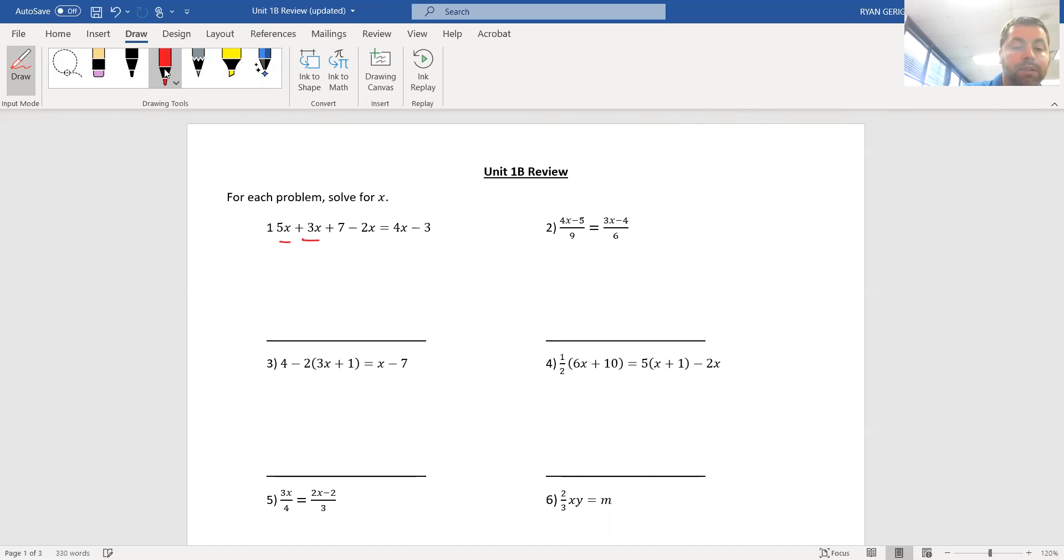So, that's a 5x plus 3x minus 2x. So, 5 plus 3 is 8. 8 minus 2 is 6x plus 7 equals 4x minus 3.